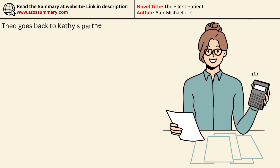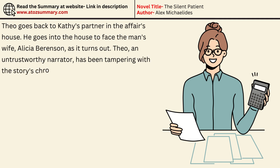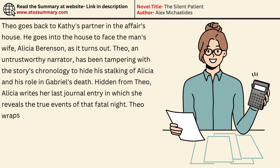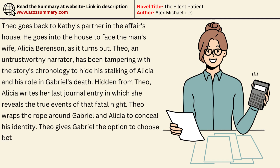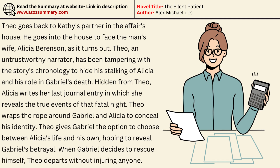Theo goes back to Kathy's affair partner's house and goes inside to face the man's wife — who turns out to be Alicia Berenson. Theo, an untrustworthy narrator, has been tampering with the story's chronology to hide his stalking of Alicia and his role in Gabriel's death. Hidden from Theo, Alicia writes her last journal entry revealing the true events of that fatal night. Theo had wrapped rope around Gabriel and Alicia to conceal his identity, then gave Gabriel the option to choose between Alicia's life and his own, hoping to expose Gabriel's betrayal. When Gabriel decides to rescue himself, Theo departs without directly injuring anyone.